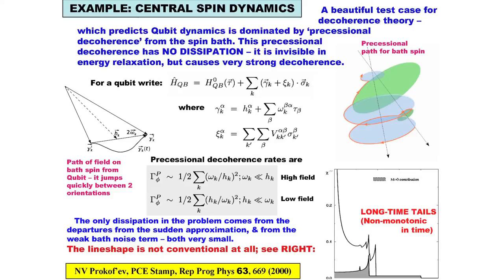Notice that there's no energy exchanged. This bath spin is just precessing — it doesn't change its energy at all. All it's doing is eating up phase from the central system. So it doesn't involve dissipation. And that means that the line shape of the central system will be very unusual — it'll show long-time tails, and the correlation function will not decay uniformly. They certainly won't decay exponentially, and they won't even necessarily decay uniformly — they can show resurgences and so forth.